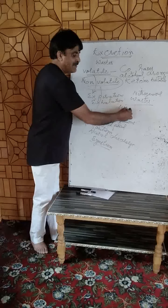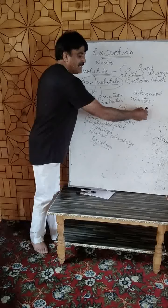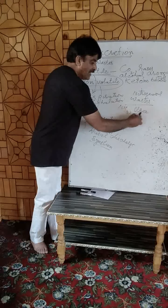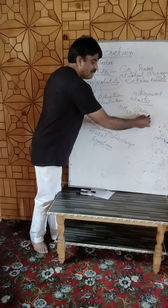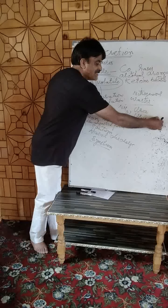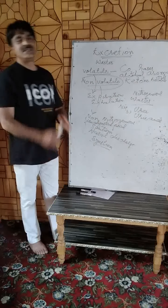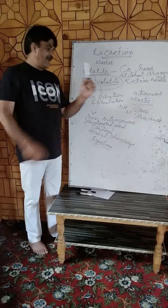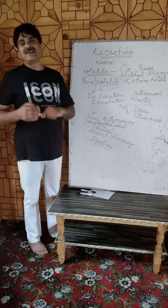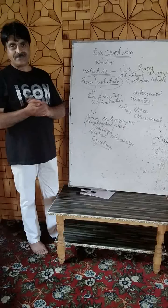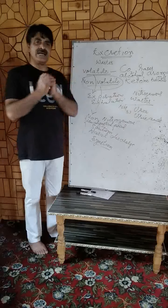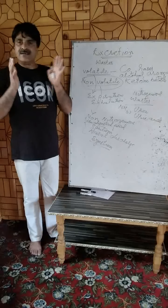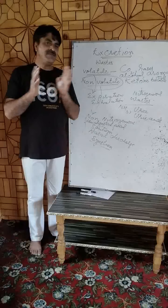Nitrogenous wastes produced in the body include ammonia, urea, uric acid, purines, and pyrimidines. All sorts of these nitrogenous wastes are removed from the body and the removing process is called excretion.